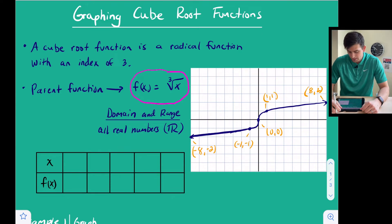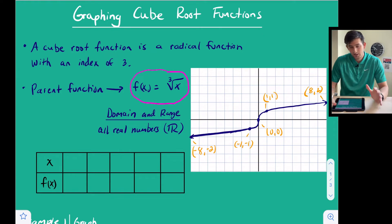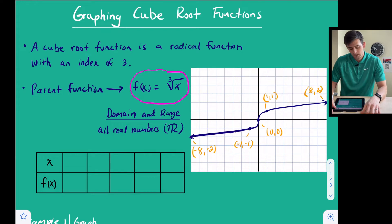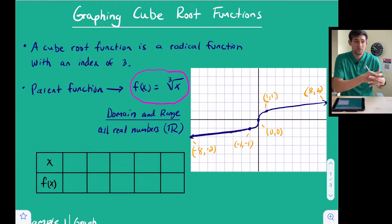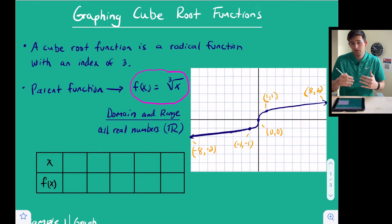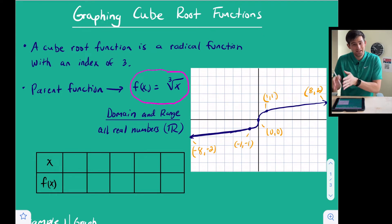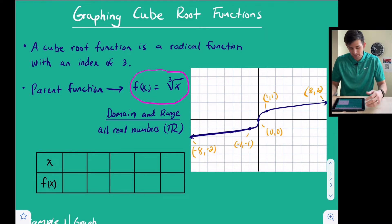Our parent function is f(x) equals the cube root of x, and on the right side we have a graph showing what that parent function looks like. Good x values to use are perfect cubes. We can take the cube root of a negative number, because a negative times a negative times a negative is still a negative — unlike with square root functions where we couldn't use negatives.